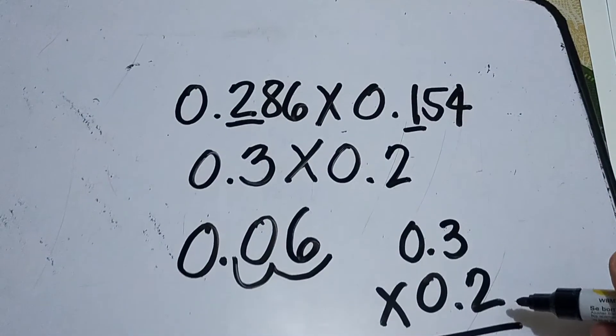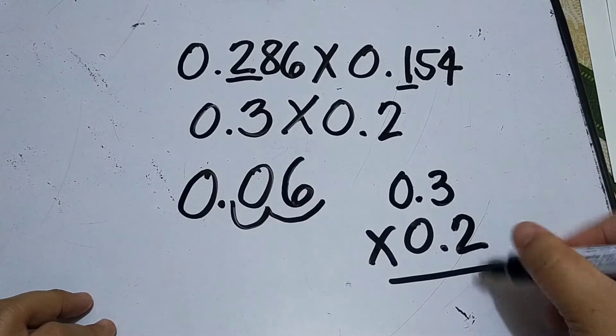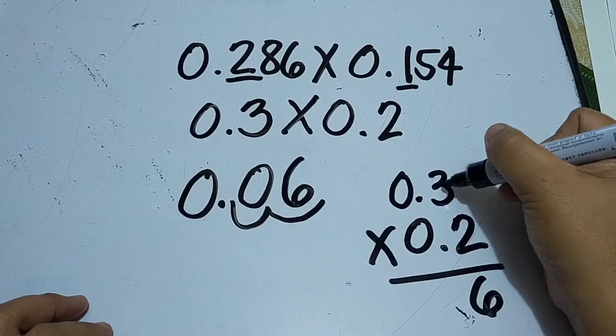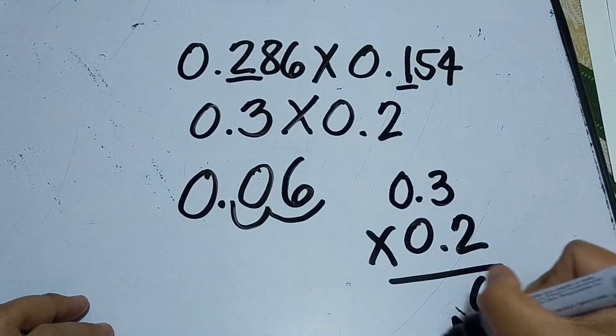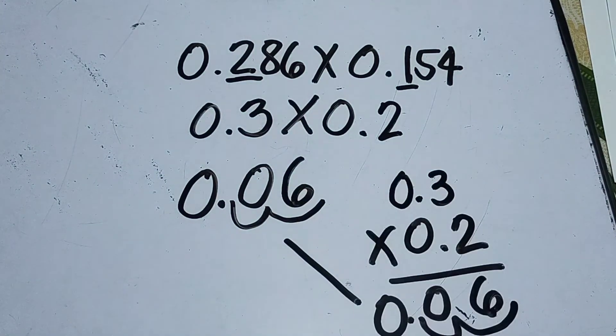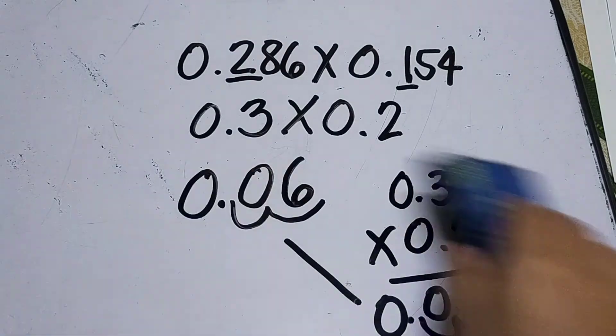Three tenths times two tenths - three times two is six. Then you're going to count the number of digits to the right of the decimal point: one, two, one, two. Same answer. Okay, another given.